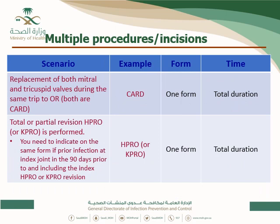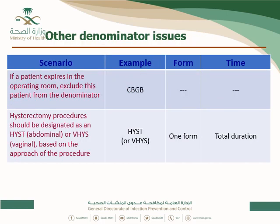Replacement of both mitral and tricuspid valves during the same trip to the OR is considered one cardiac surgery — one form, with total duration of both valve replacements. Total or partial revision of hip or knee replacement is one surgery and one form with total duration. If a patient expires in the OR, they are excluded from surveillance, because there is no possibility of developing SSI.